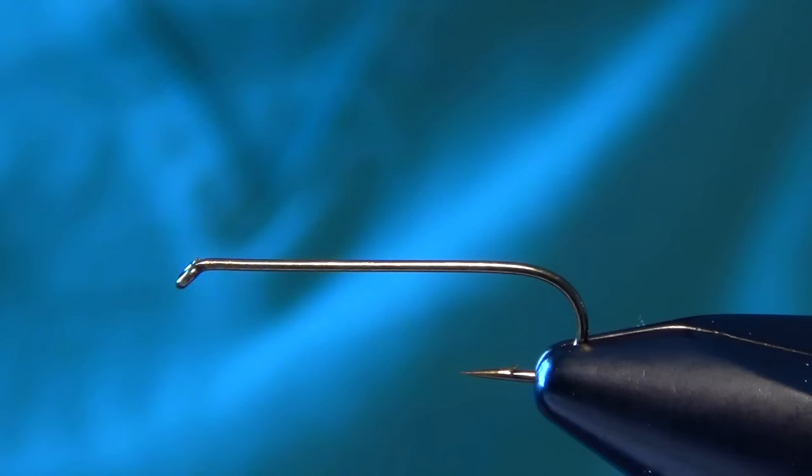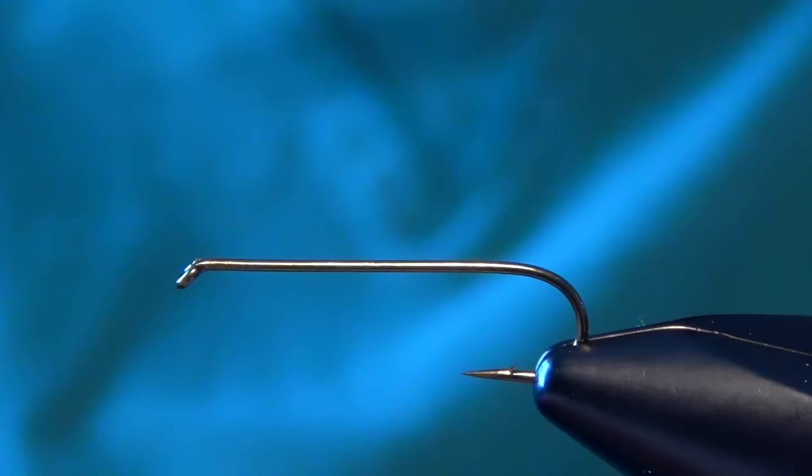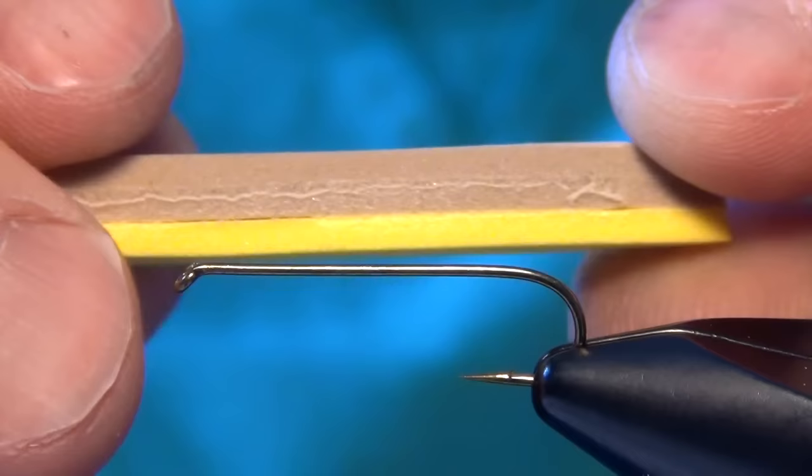In this video, we're going to tie a fly called the Moorish Hopper. This is an ultra-realistic hopper pattern that's actually a lot easier to tie than it looks, but it requires some prep work. The prep work all comes in making the body. That's really what all the time is in.